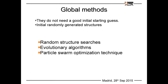The second group is global methods, which do not need a good initial starting structure. If you have no clue about the structure of a material, these are the methods to use. They all use randomly generated structures initially and include random structure searching, evolutionary algorithms, and particle swarm optimization.